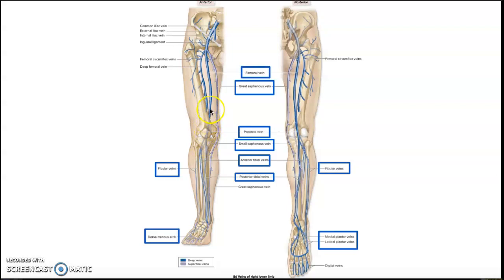The popliteal vein turns into the femoral vein, which eventually drains and merges into the external iliac vein once it passes the inguinal ligament, then turns into the common iliac vein. There's also an internal iliac vein, but we're not going to get into the specific veins that drain into it.